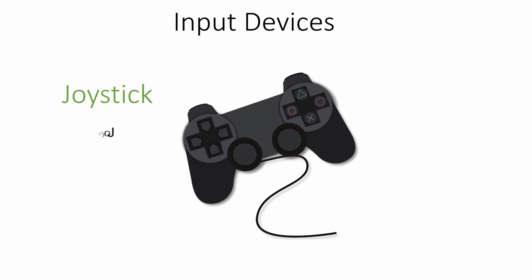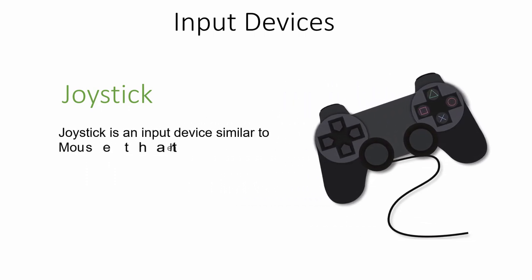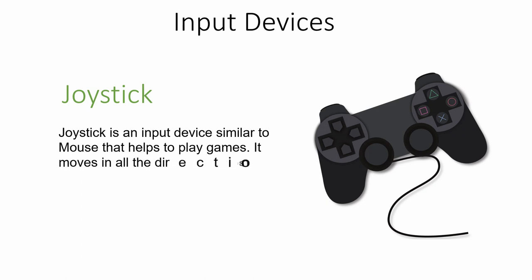Joystick is another input device similar to the mouse. It is basically used to play games. Instructions in games can be provided with the help of a joystick, which controls the character in the game. You might have used this device while playing video games. It is an input device that helps to control characters in a game.